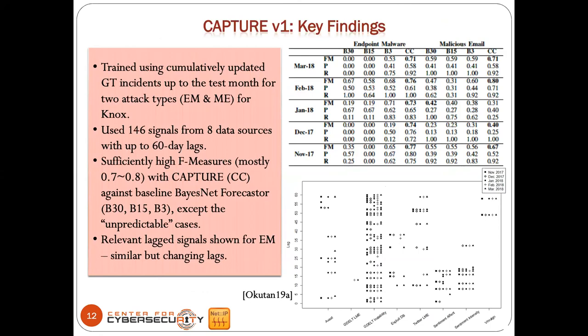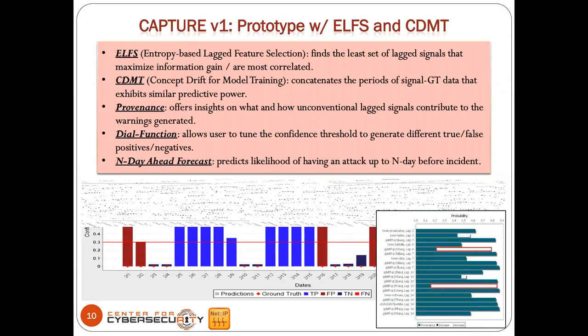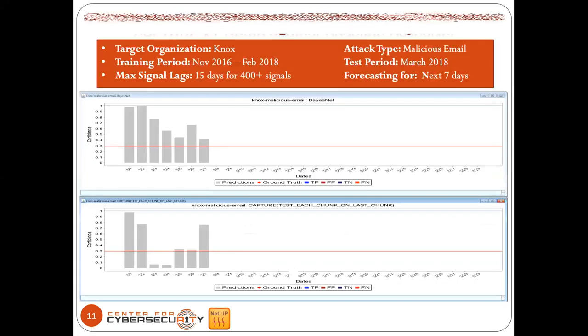A question came in: what machine learning method is used for Capture V1? The base system is a Bayesian network — BayesNet. We compared a baseline of BayesNet with no additional features against BayesNet augmented with entropy-based lag feature selection and concept drift. These are all customized extensions within the machine learning world integrated together with BayesNet.